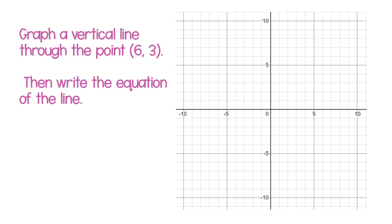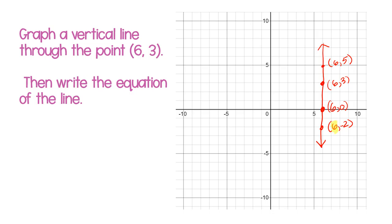If I want to graph a vertical line through the point 6, 3, vertical is straight up and down. When you graph lines, it would be great to put arrows on the end of them because lines go on forever. Looking at this point: 6, 0; this point is 6, negative 2; this point is 6, 5. My x-values are all 6. So the equation of the line is x equals 6.